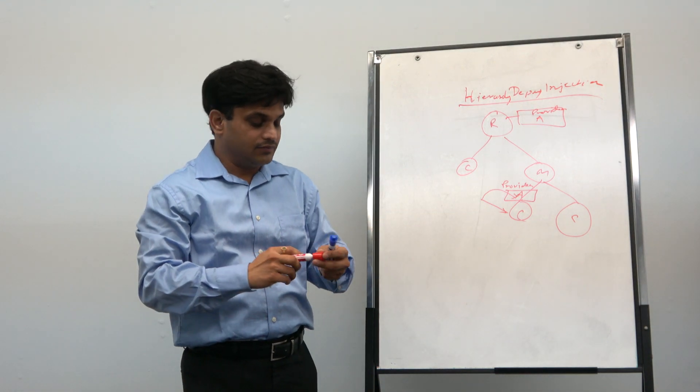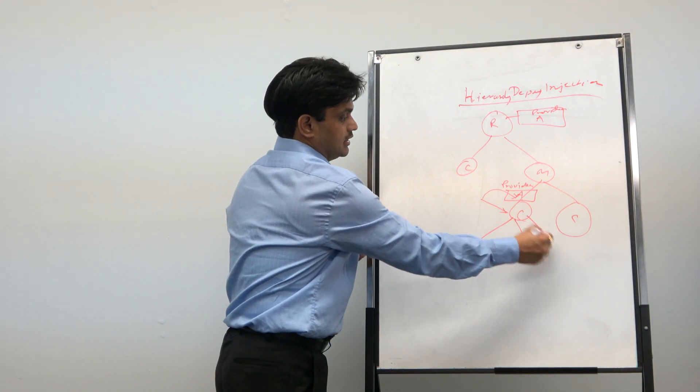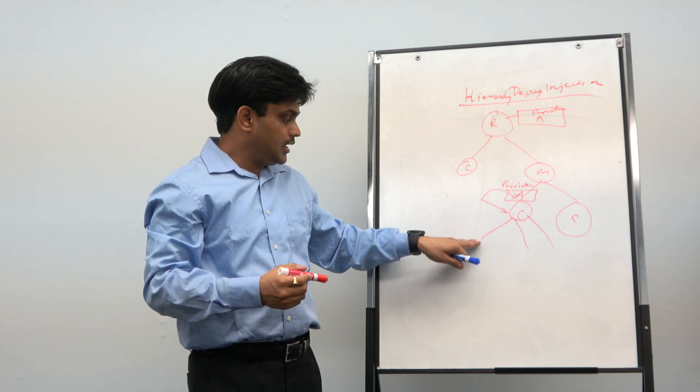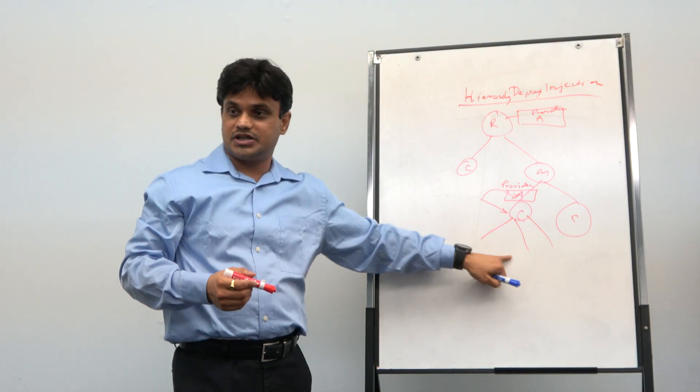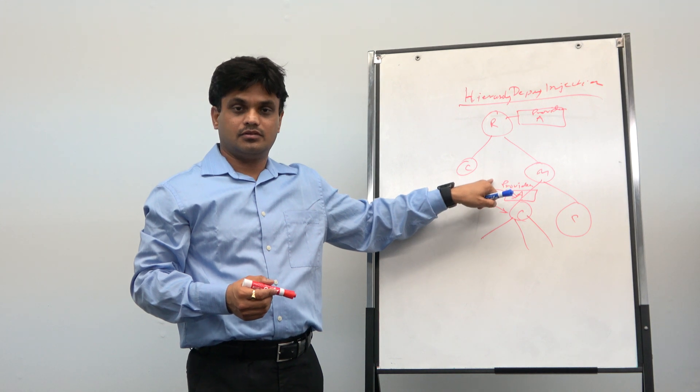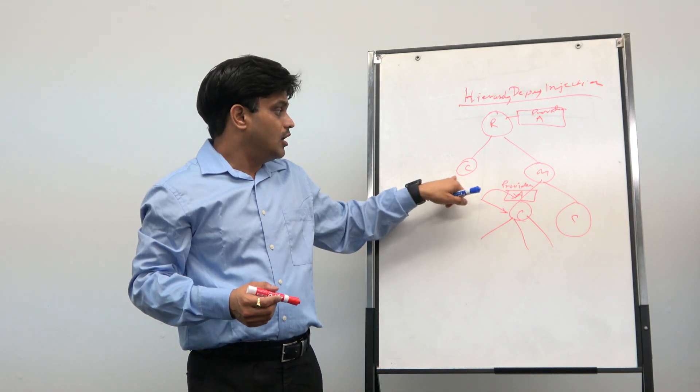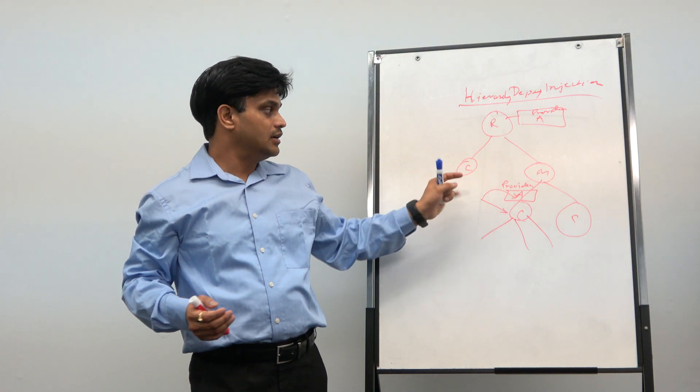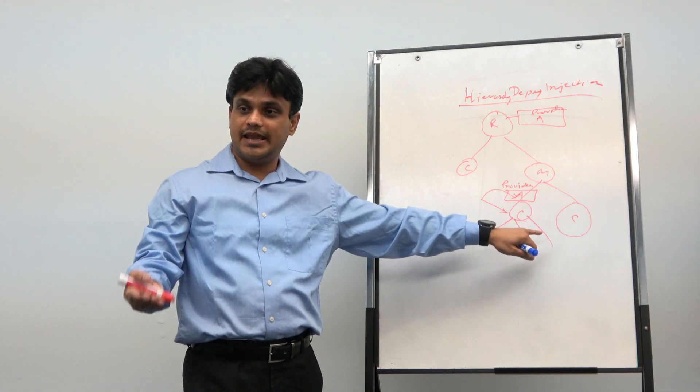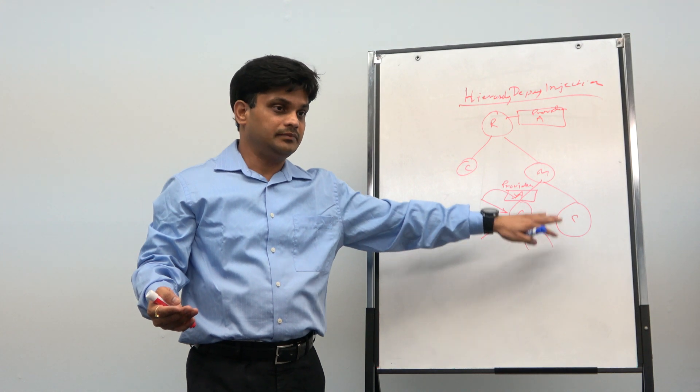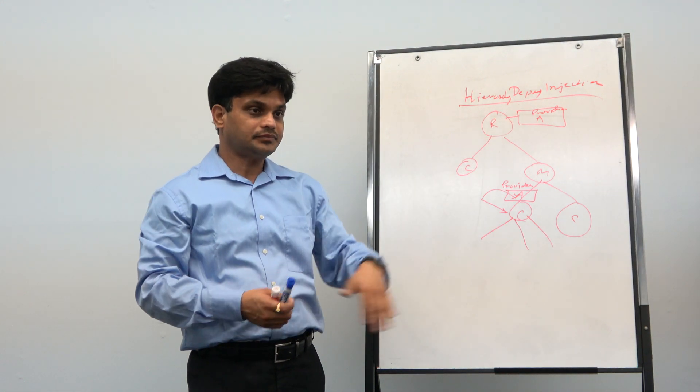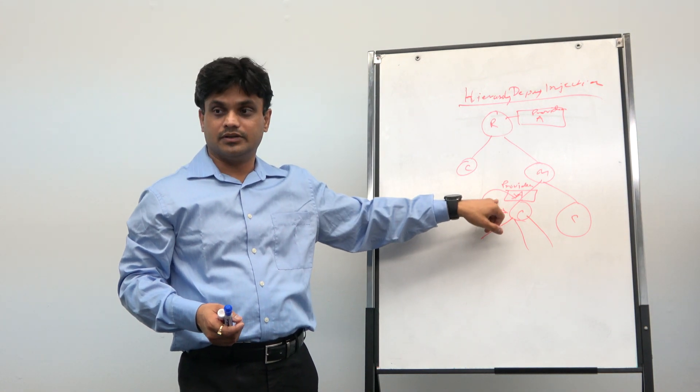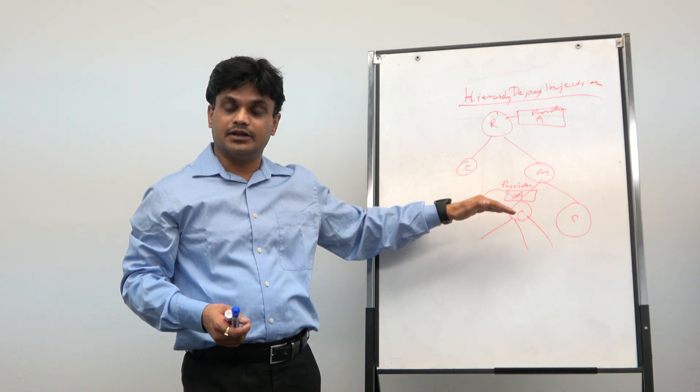That is what we called, within this and the children of this, what is the service A? Dependency of A, if you ask, then it will come from here. So they will share this instance. However, the other node, like this component and this component, they will share, if they need the service A, they will share the instance of this service, not this one. That is what it is called as hierarchical dependency injection.